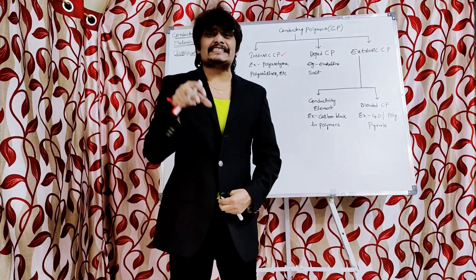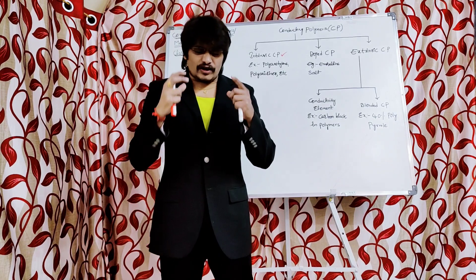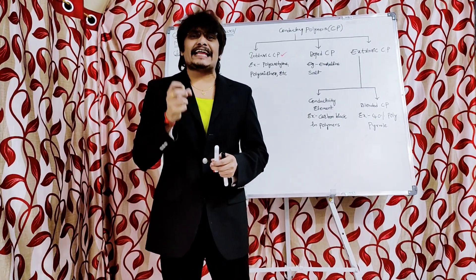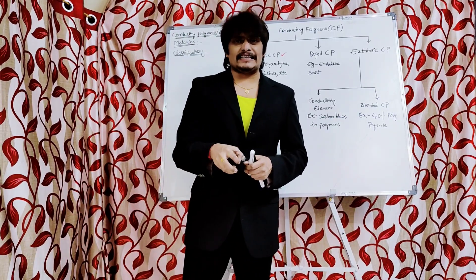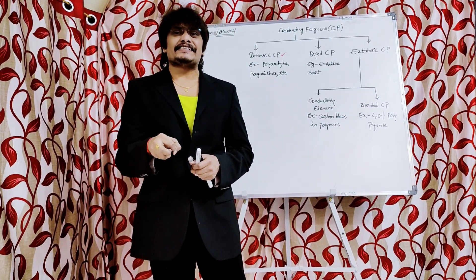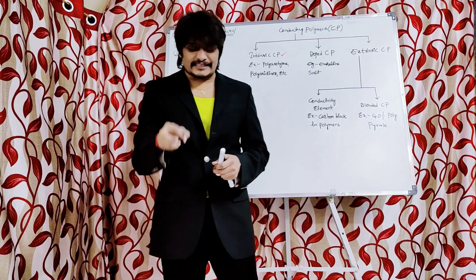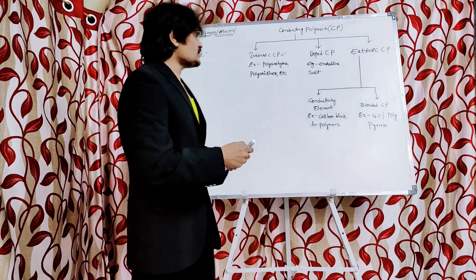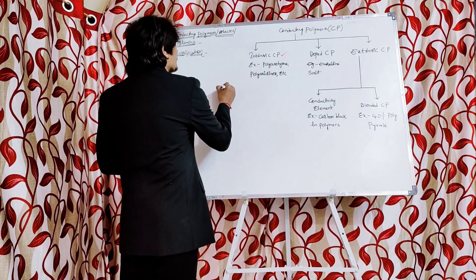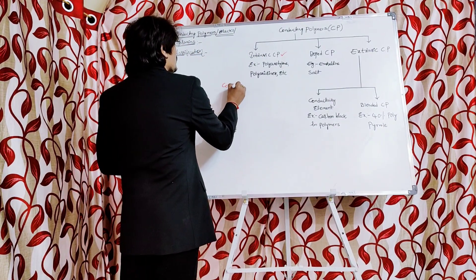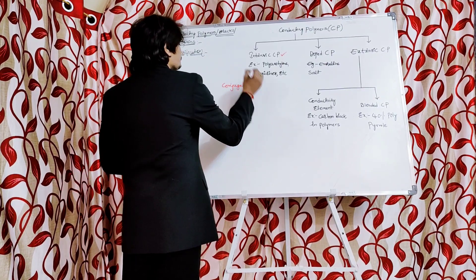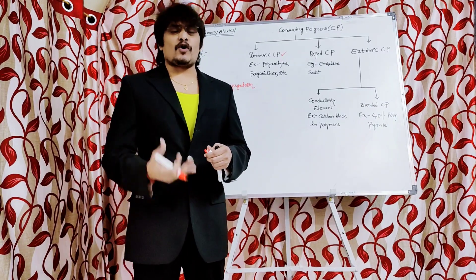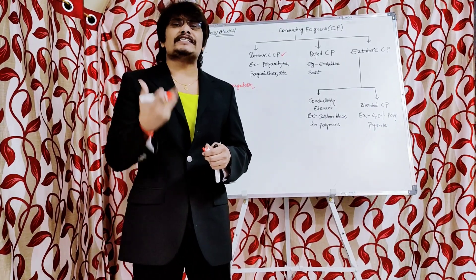Intrinsic means internal. These are the polymers which conduct electricity with their internal structure. Basically, these intrinsic conducting polymers conduct electricity because of the conjugation present in them. Conjugation means the presence of alternate double bonds.